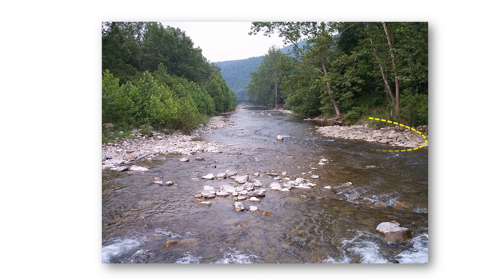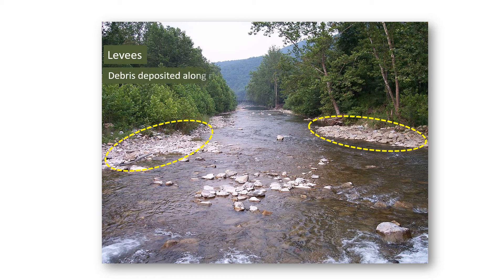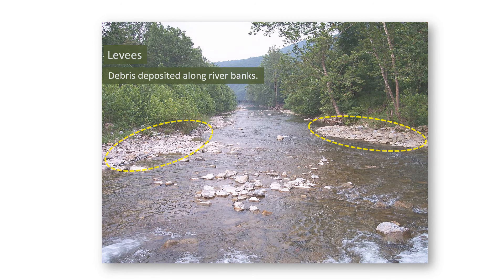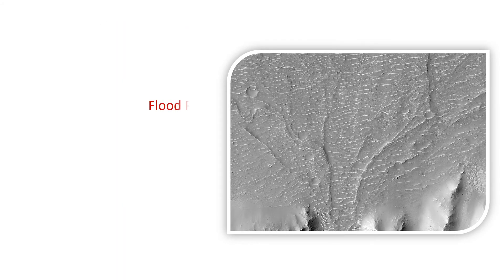Rivers usually deposit debris along their sides. As a result, the height of the river banks increases. Such deposits are called levees. Plains adjacent to a river get flooded during times of floods — such plains are called flood plains.